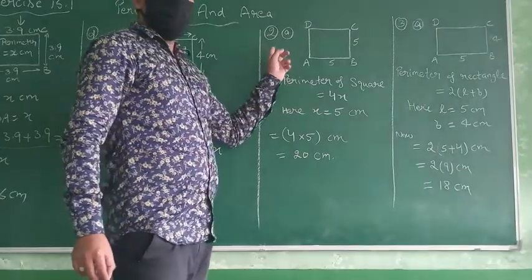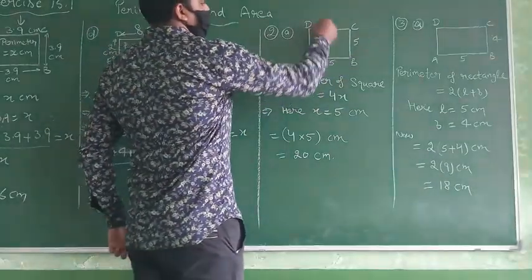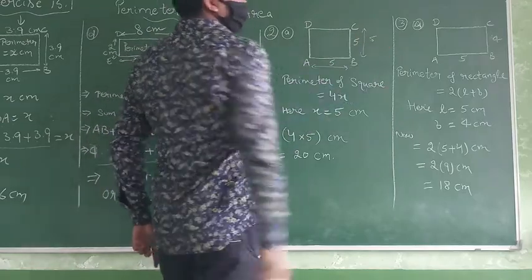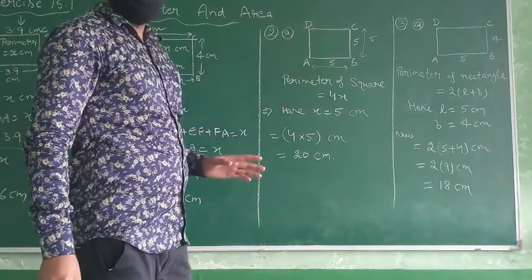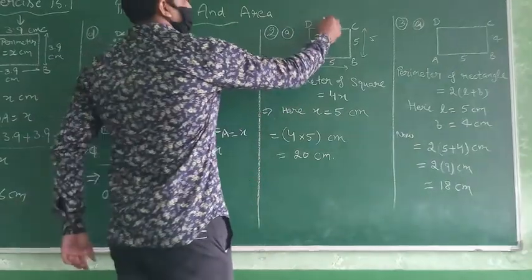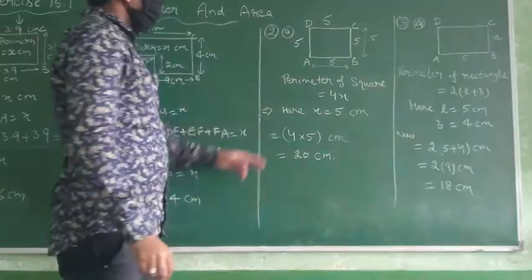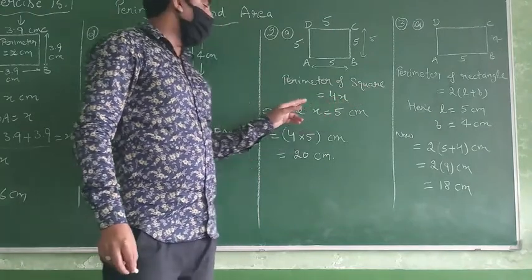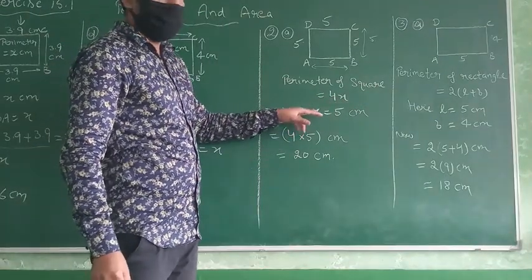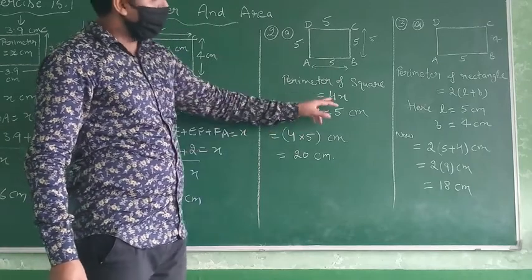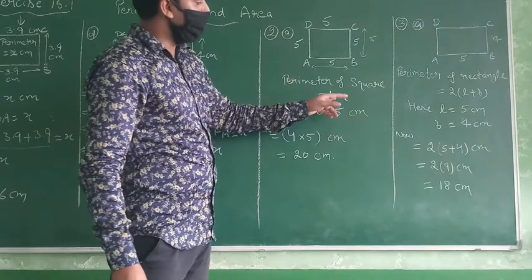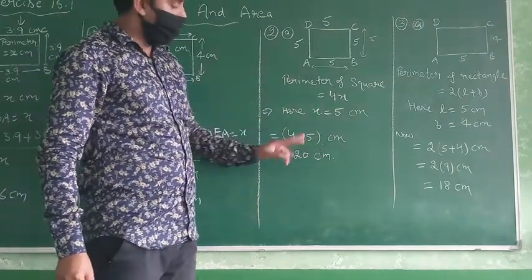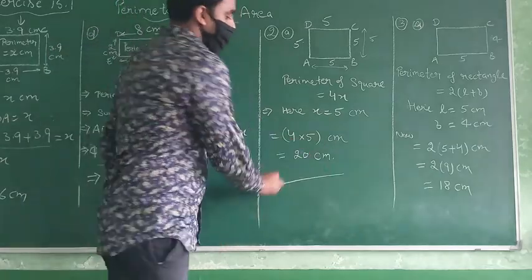Now part 2, we have figure ABCD. Length is 5, breadth is also 5. Means what is it? This is square, because all sides are same. So this is also 5, this is also 5. What is the formula of perimeter of square? It is 4X. So here we have X. What is the value of X? It is 5 cm. So the formula is 4X. Put X equal to 5. So now 4 multiply 5 cm equals 20 centimeter. This is the answer.